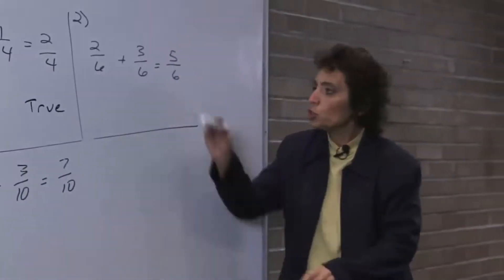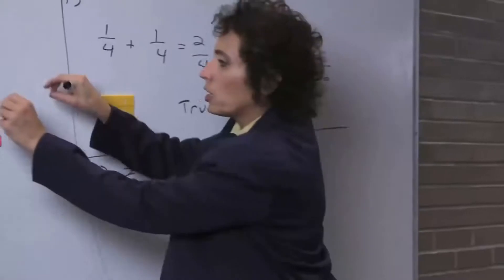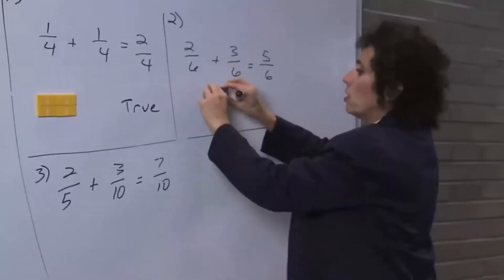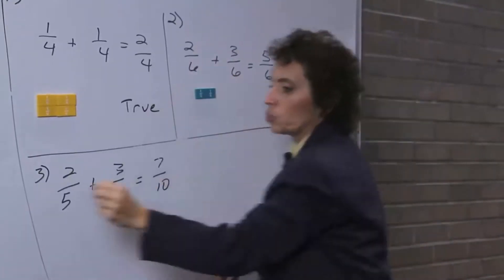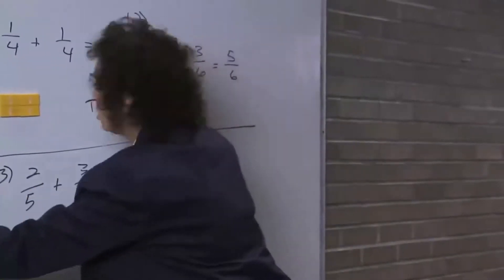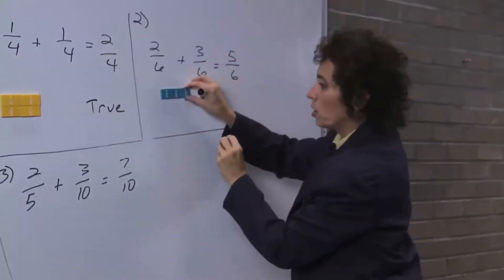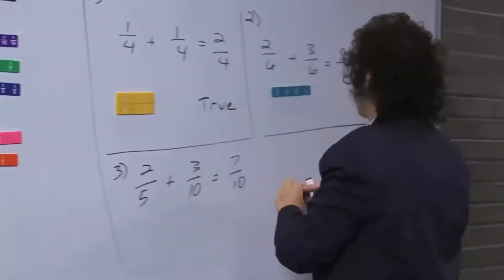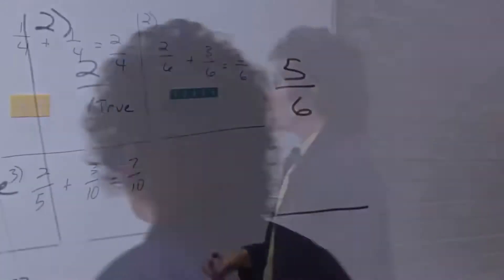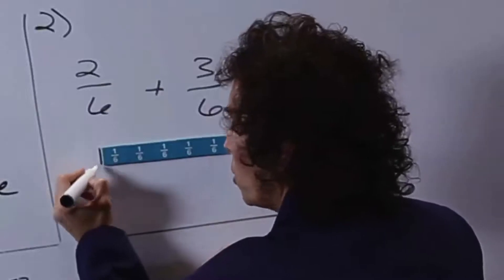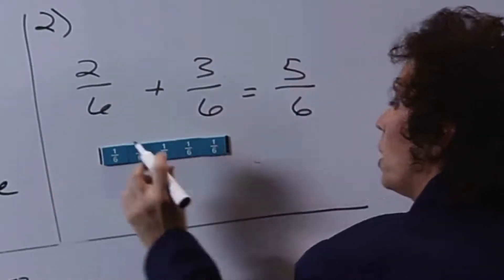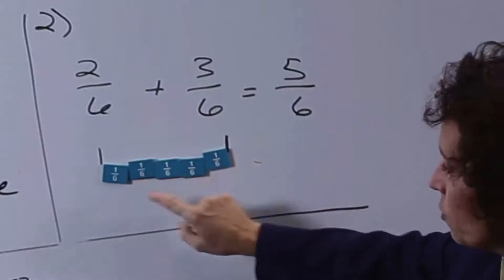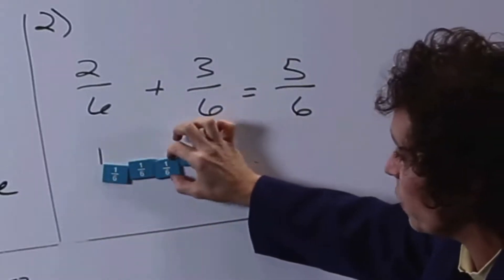Let's take a look at this one: two sixths plus three sixths equals five sixths. Let's take two sixths — there's two sixths — there's your three sixths, and that's supposed to equal five sixths. I'm going to mark off the length of them and see if it's equal to five sixths. One, two, three, four, five, six — there's your two sixths plus three sixths equals five sixths. So that's true.